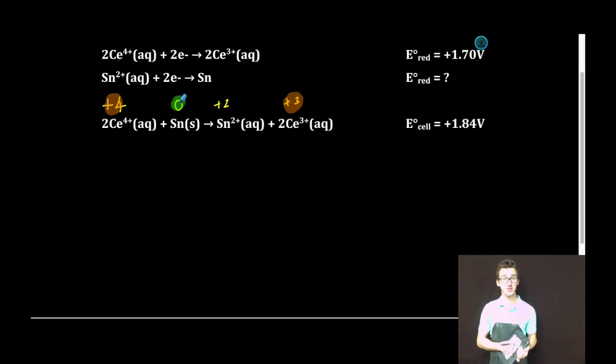As I look at tin, it goes from the zero to plus two oxidation state, indicating that it's been oxidized. As I try to find this missing reduction potential, I need to keep that in mind.